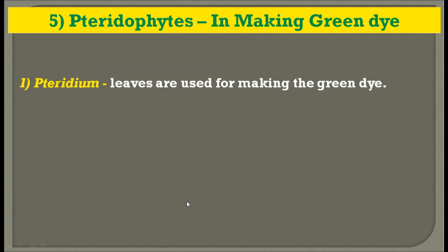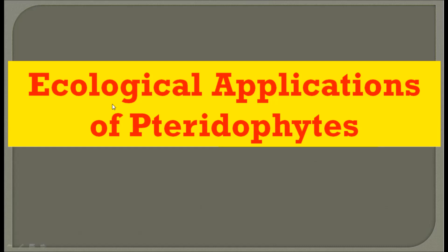Pteridophytes can also be used in making green dyes. The example for production of green dyes from pteridophytes is Pteridium. This plant is produced on a great scale, and the leaves of these plants are used in making green dyes.